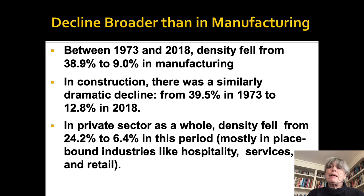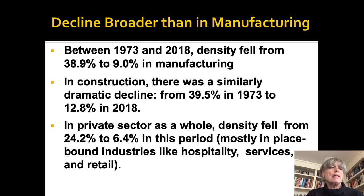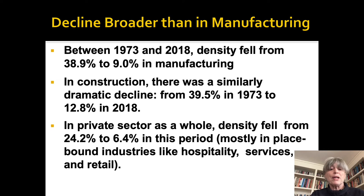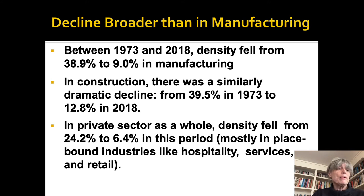Many people assume that union decline is related to deindustrialization, and it is related, but the decline in unionism is by no means limited to manufacturing. In construction, for example, which obviously can't be outsourced, the decline was almost as sharp. The slide shows figures from 1973 to 2018, and in construction the dramatic decline in unionism is only slightly less severe than in manufacturing. So it's not just a story of globalization or outsourcing — in service sector jobs and construction, we've seen similar levels of decline.